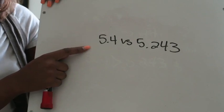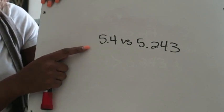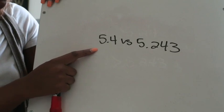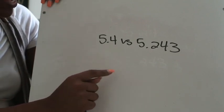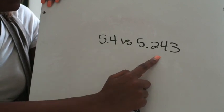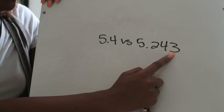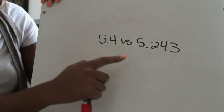So the two mistakes that I've seen students make in the past is the first one is they will read these numbers as five and four tenths which is correct and great and they'll read this one as five and two hundred and forty three thousandths and that's correct and that's great